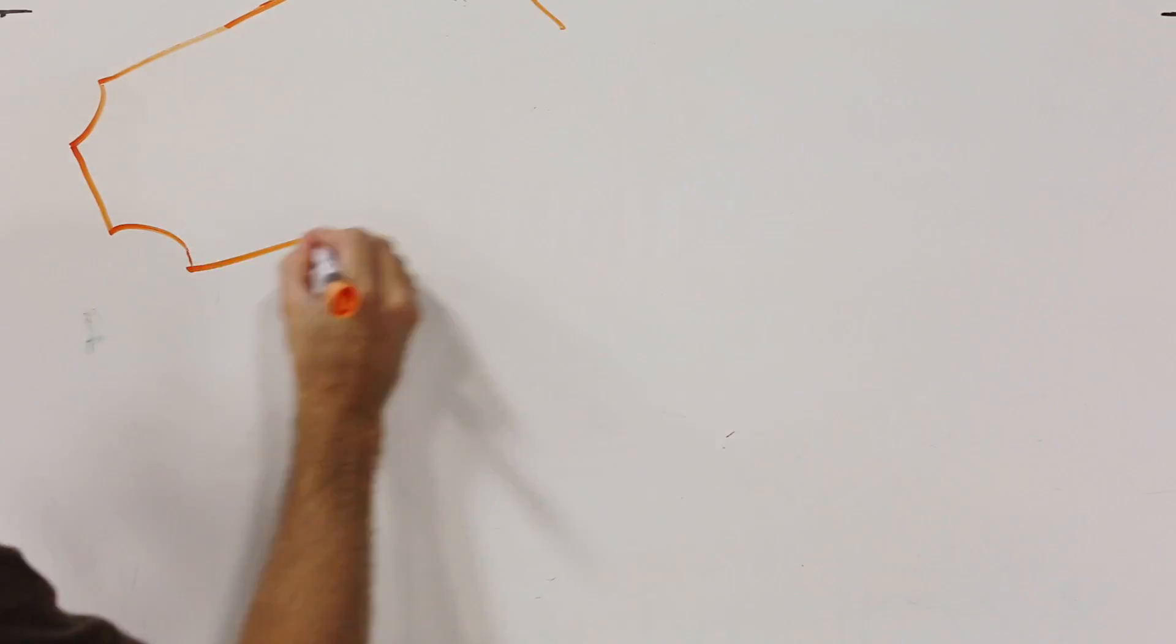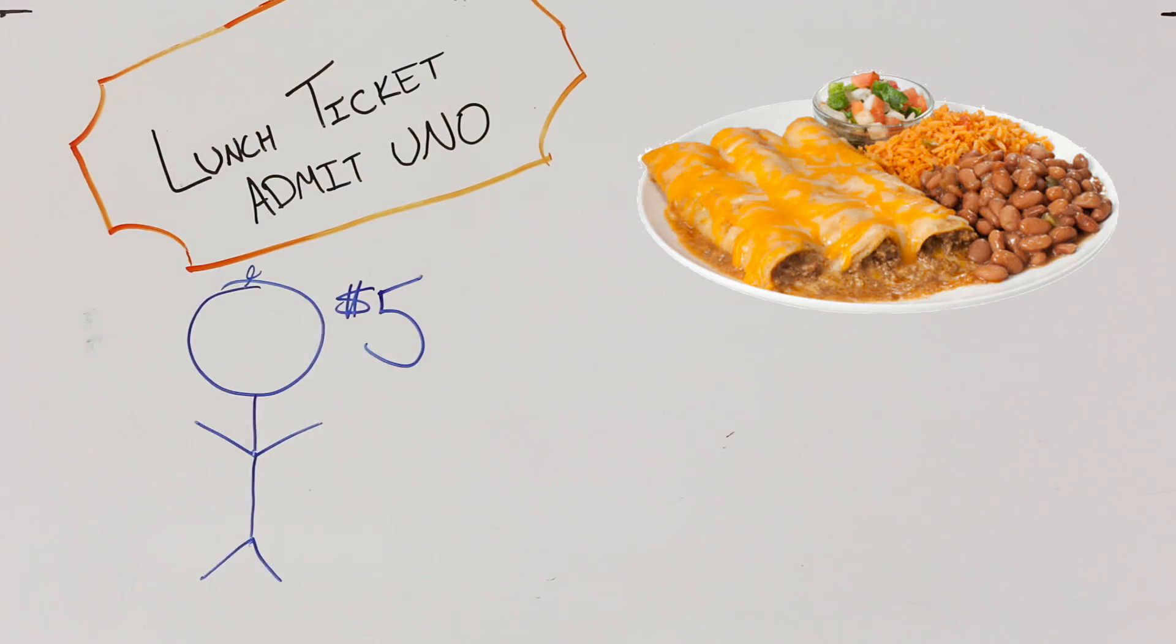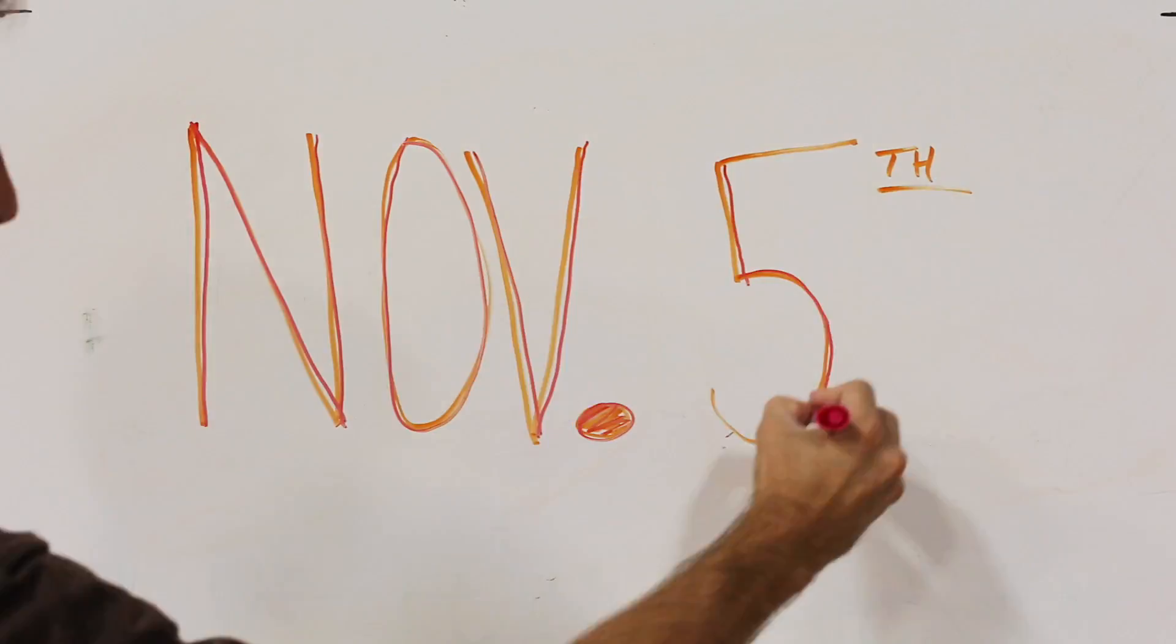and loads of fun. So buy a lunch ticket today for a Dominican-inspired enchilada meal. Adult lunches are $5, kids 12 and under are $3. Start saving your pennies for November 5th.